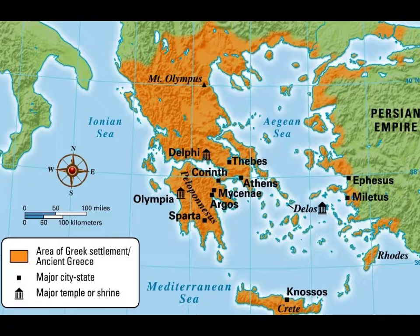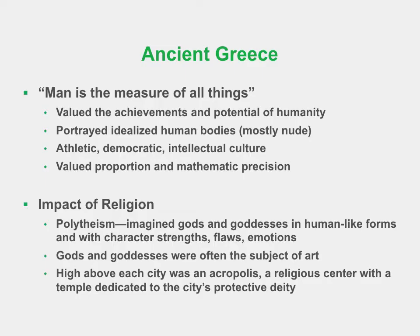The rocky, mountainous terrain of the mainland pushed settlement towards the coastlines and onto neighboring islands and lands of Asia Minor, now modern-day Turkey. Despite the spread out nature of Greek settlement, incredible achievements in art, literature, philosophy, mathematics, and of course seafaring techniques developed throughout this geographic expanse.